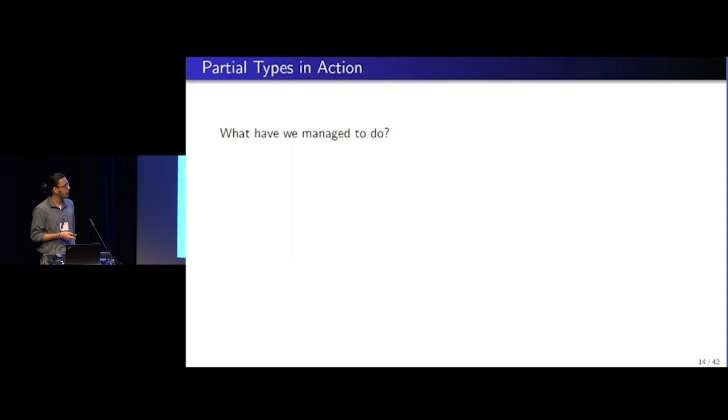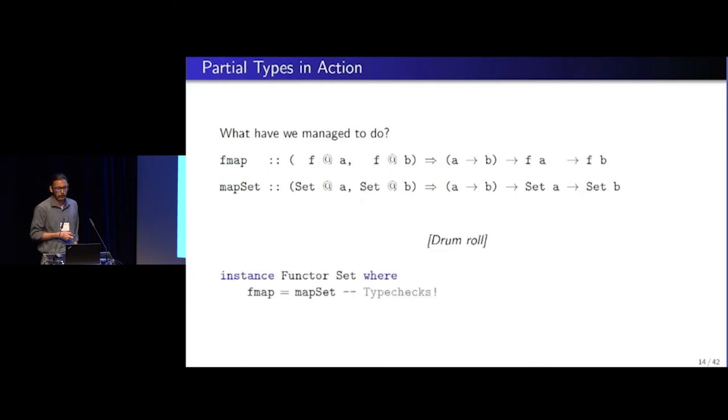But now what exactly have we managed to do? If we line up the types, we see that there is something interesting happening, right? We can finally have a functor instance of set. And the type checker would be perfectly happy to do that.